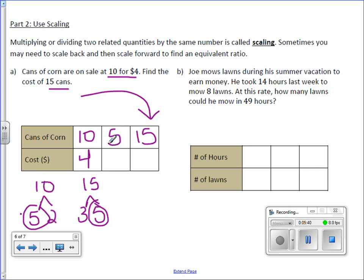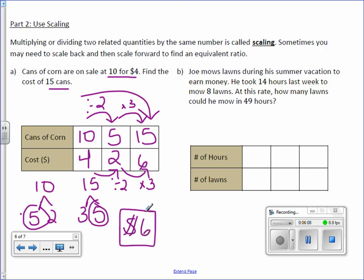And go one step at a time. How did I get from 10 to 5? Well, you can divide by 2. Do the same underneath. 4 divided by 2 is 2. And then how do you get from 5 to 15? You times it by 3. Do the same. 2 times 3 is 6. So the cost is $6.